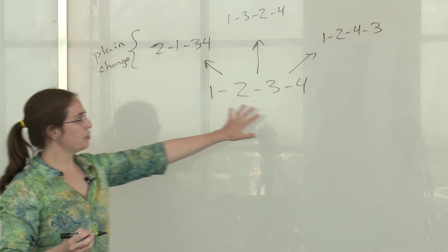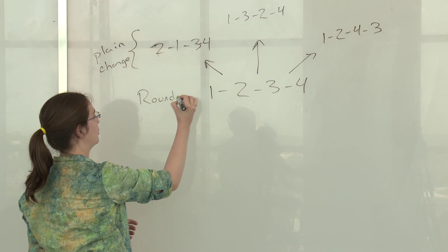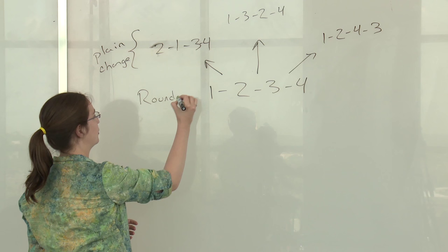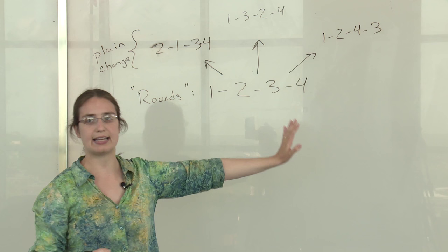Now this one two three four order actually has a special name in change ringing. We use it so much that we've given it a title and we call it rounds. So whenever I say rounds I mean this one two three four order, this descending pitch from highest pitch to lowest pitch.